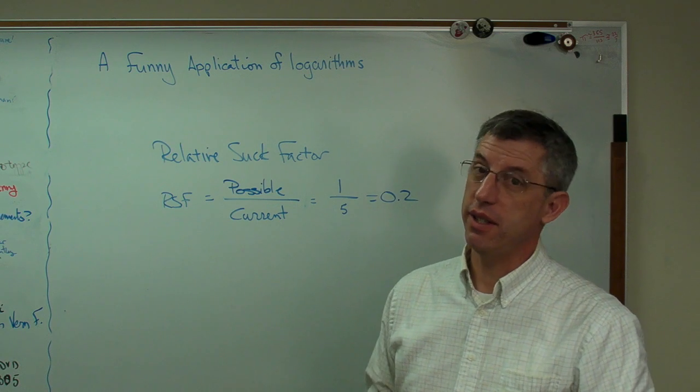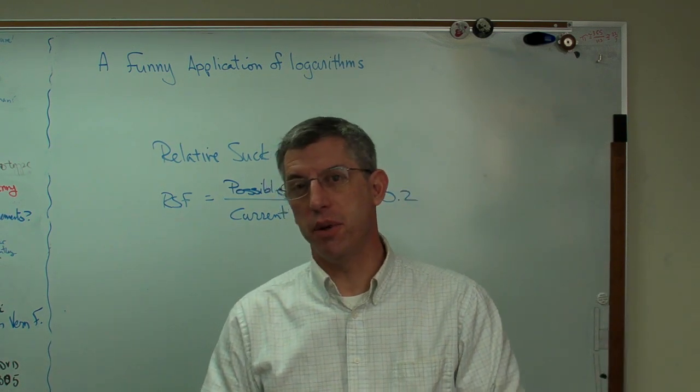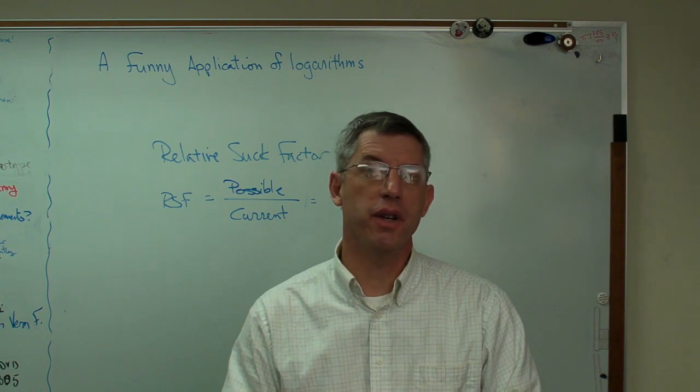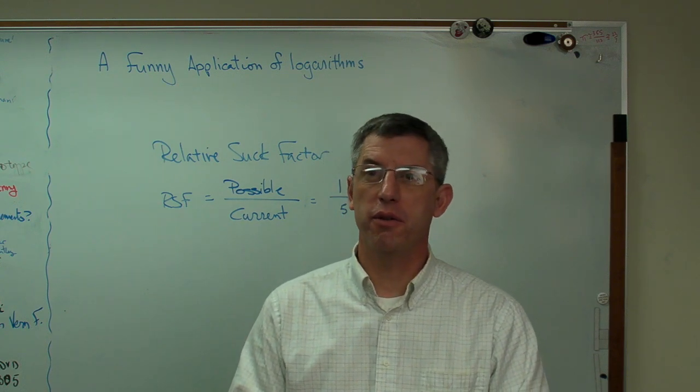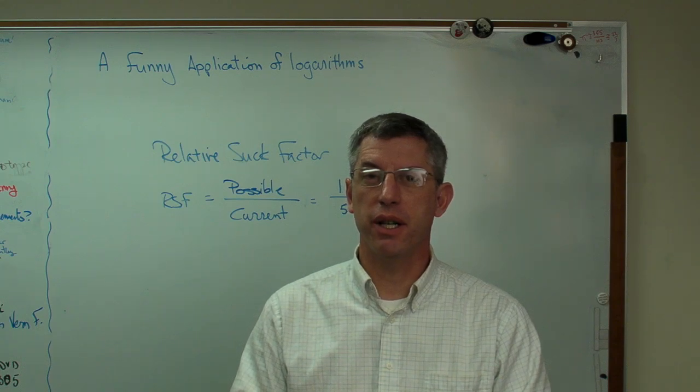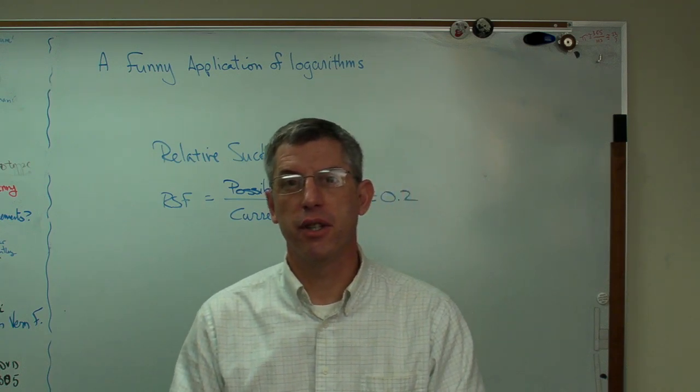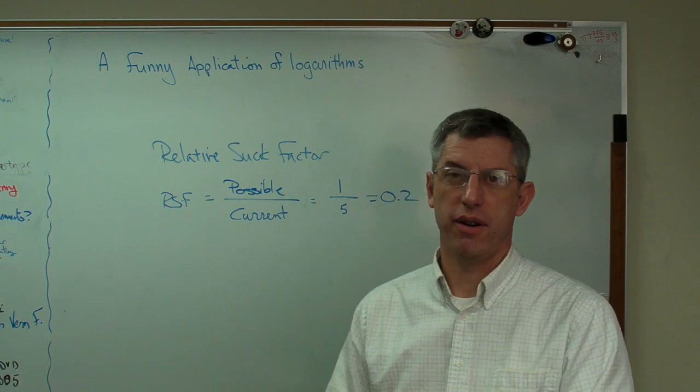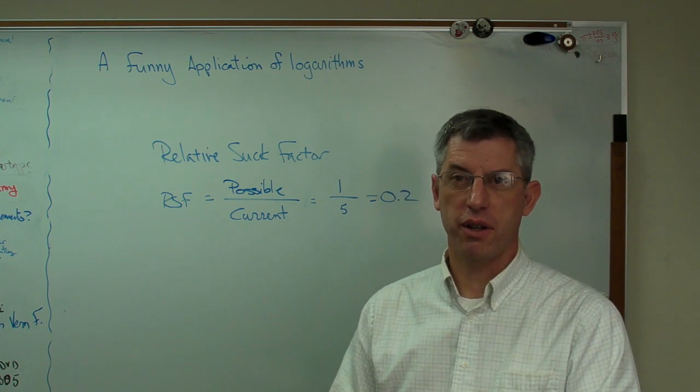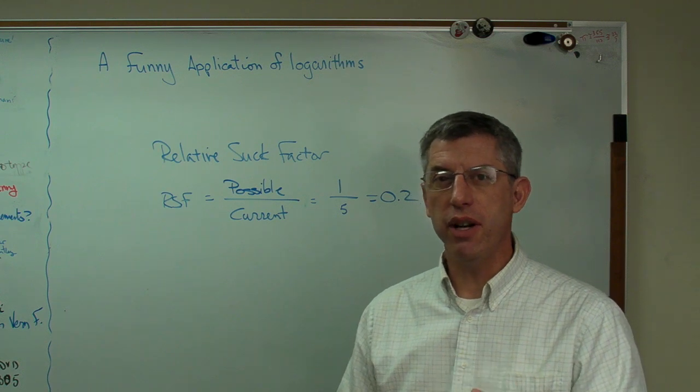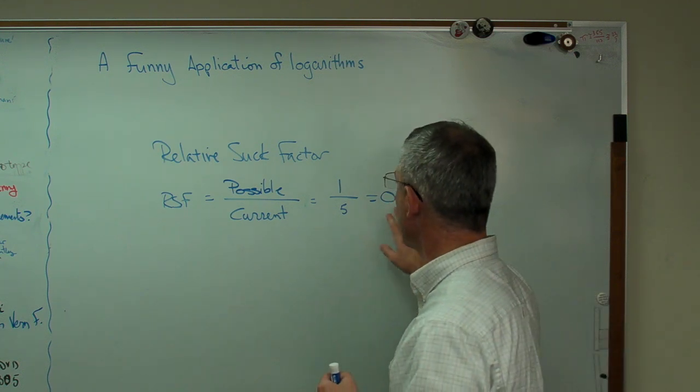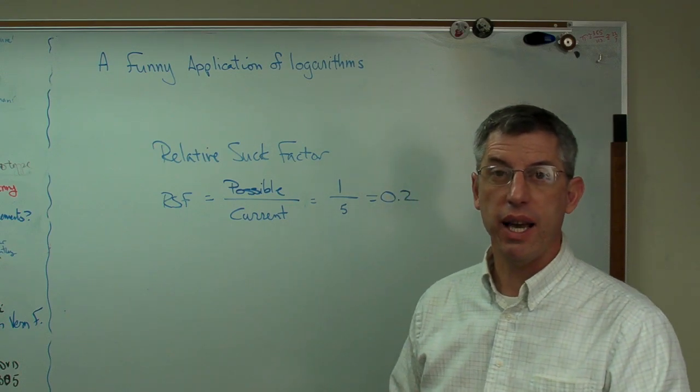The problem with this is it's not linear. The best thing imaginable, you're going on top of Mount Olympus and eating the food of the gods, you're going to have a relative suck factor of 0, you're going to have 1 over infinity. If you have the worst meal ever, your relative suck factor goes up. So this is a very nonlinear scale. As things get better and better, the numbers get smaller and smaller, but they can't ever go negative, and they can't ever go to 0.